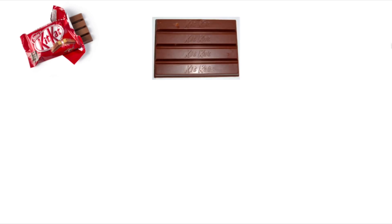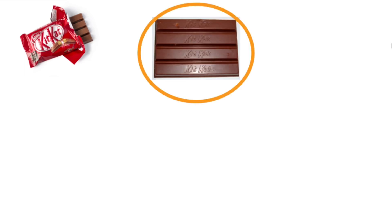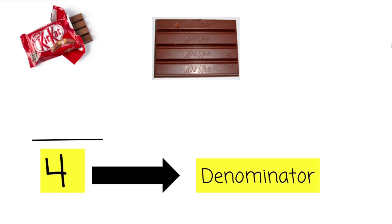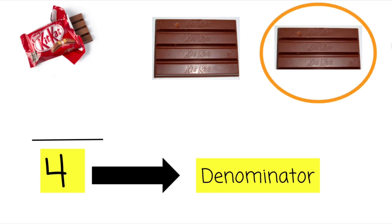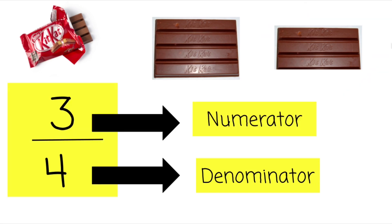Let's look at another example. We've got this delicious KitKat bar here, and a KitKat is made up of four equal parts, so four is our denominator. Now we're hungry, so we ate one of those pieces and we're left with three. Three pieces remain, so we have three parts of that whole left, so three is our numerator.